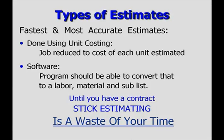The fastest and most accurate estimates that you can do are done by using unit costing. This is where a job is reduced to the cost of each unit estimated — a square of roofing, a square foot of floor framing, a square foot of drywall installation. That's what I mean by unit costing.